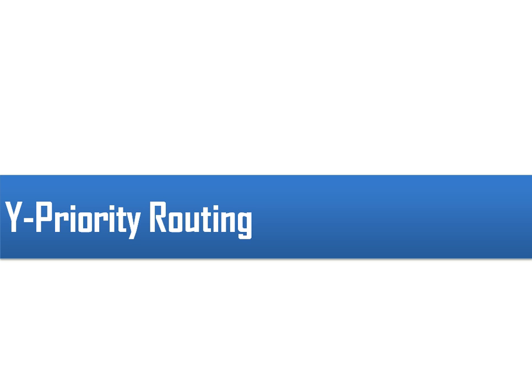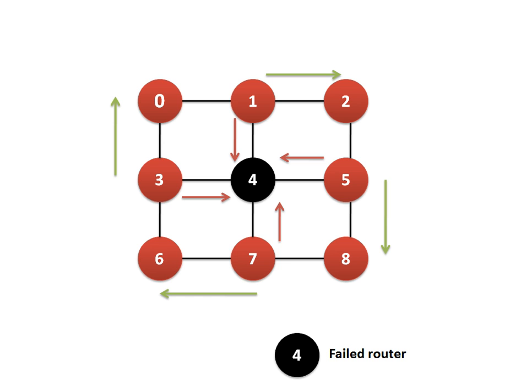The next routing we are discussing is Why Priority routing. This routing is actually developed to handle router failure. Let's assume that router number 4 has failed and one router is working according to XY routing and has to send a packet to node 4 in the south direction. What it will do is — whenever it finds that the next router in the south direction is failed — instead of sending south, it will send to the right neighbor.